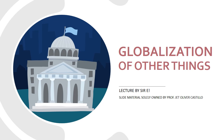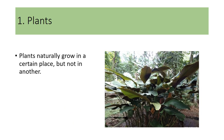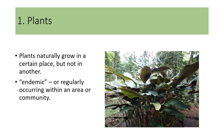So why don't we head on to our discussion? This is, again, globalization of other things. Now, aside from political ideas, economic systems, cultural and social networks, there are many other things that have globalized by virtualization. For example, with regards to plants, those that naturally grow in a certain place but not in another, or what we call as endemic plants,